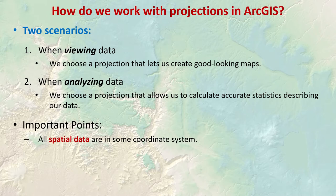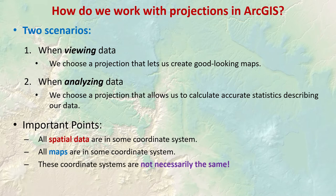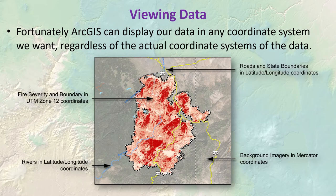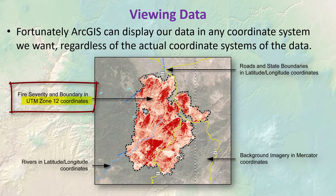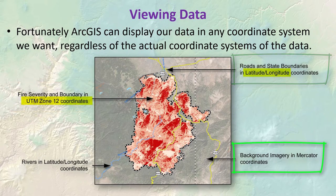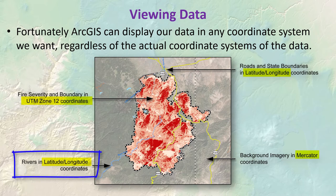Some important points to consider: all spatial data are in some coordinate system, and all maps are in some coordinate system. A neat thing about ArcGIS is that these coordinate systems do not have to be the same. For example, we can have fire severity in UTM Zone 12, roads and state boundaries in lat-long coordinates, background imagery in web mercator, and rivers in latitude-longitude — and ArcGIS can show them all together.